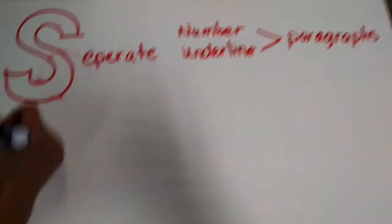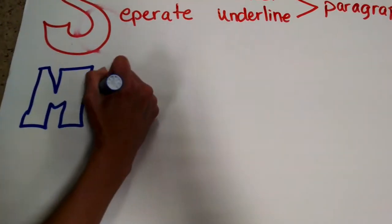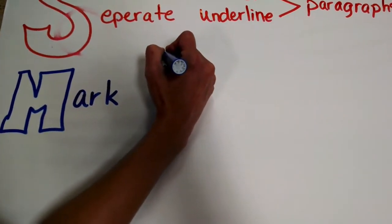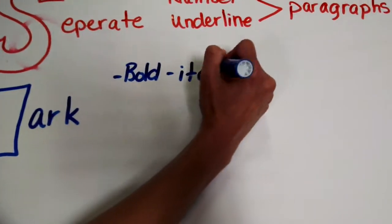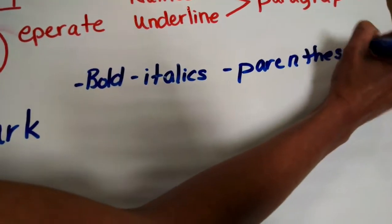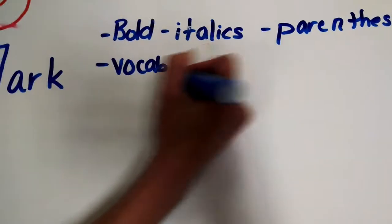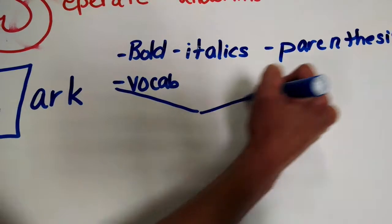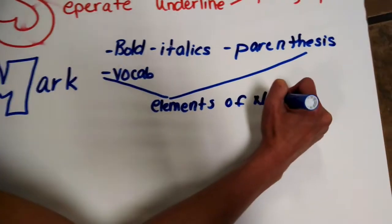The M is to mark where we find the bolds, italics, parentheses, vocab—and these are our elements of non-fiction.